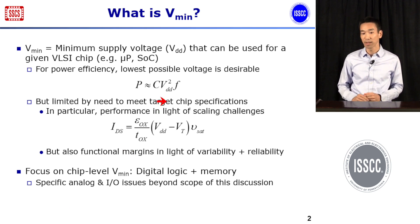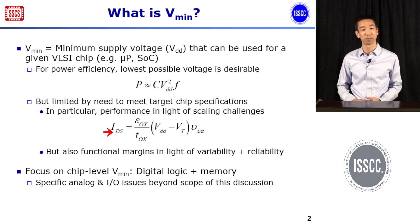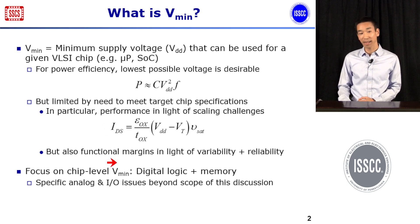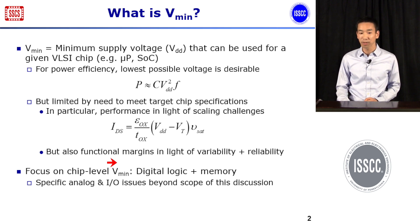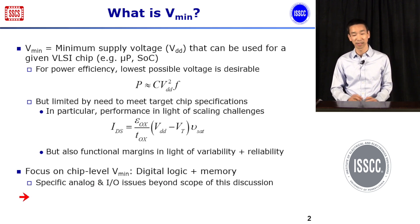We also have to remember that we have to meet our target chip specifications, and because performance and functionality all has to be sufficient. Performance in particular might be a challenging one because voltage scaling is going to degrade our transistor drive current and performance, especially with Moore's Law challenges. Functional margins are also going to be an issue, because variability and reliability are difficult challenges going forward. In this video, we're going to focus on chip level Vmin — digital logic and memory, which comprises most of VLSI chips today. We're not going to talk very much about analog and IO circuits, as these become very specialized and will be beyond the scope of this discussion.